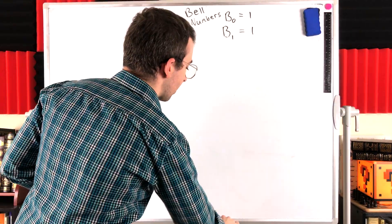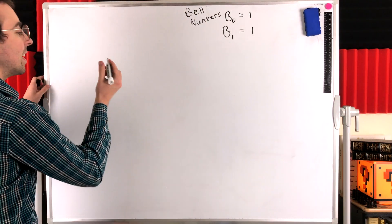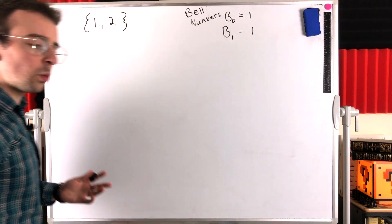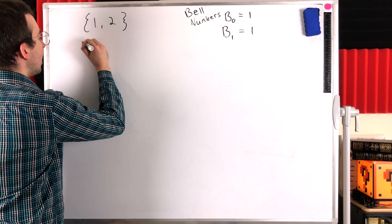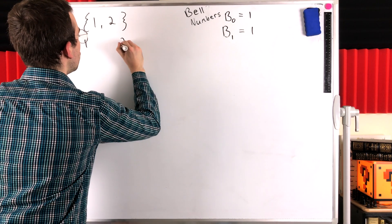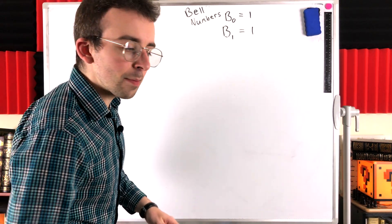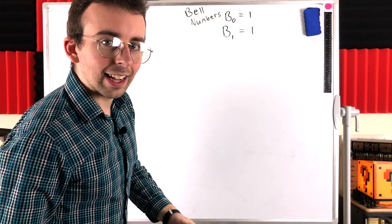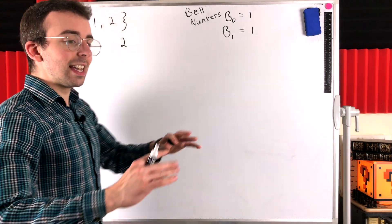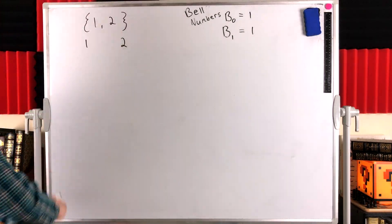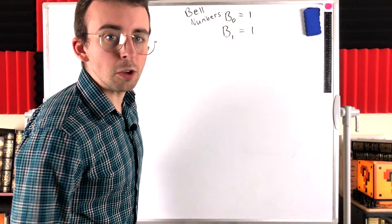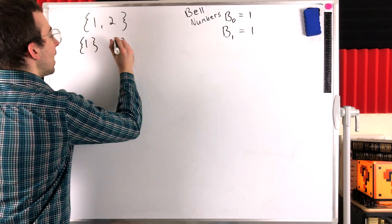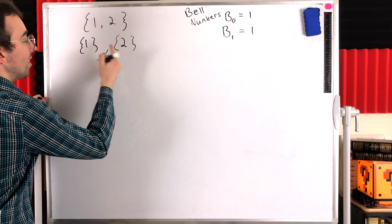Now let's check out a slightly more interesting example. How many ways are there to partition a set containing two elements? So we're looking at the set containing one and two. We could put one and two in their own separate sets. To save time when we write out these partitions, I'm not going to write out all the set brackets, but just remember that formally a partition is a set containing the subsets that we've sorted the elements into. For this example, I'll use the brackets so it's clear: we've put one into its own set and two into its own set.